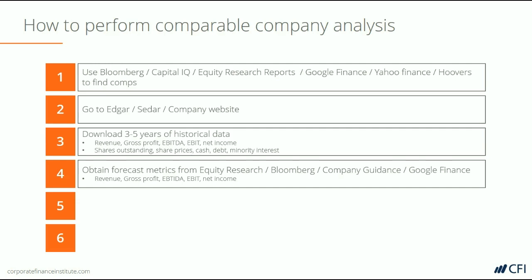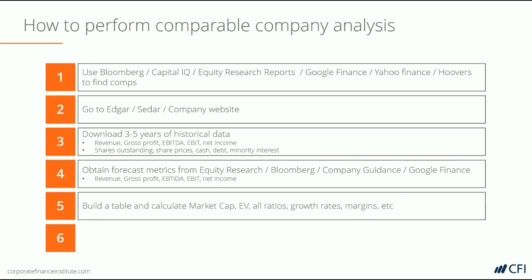You'll want the main income statement and cash flow items here for the forecast. Once you have all that information, you can build the table — starting by calculating the market capitalization and enterprise value, then using the financial information to build the ratios, growth rates, and margins in the table.